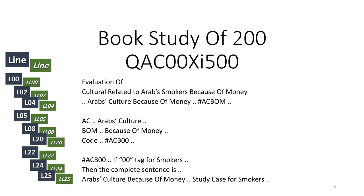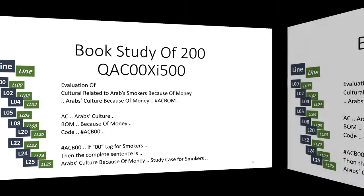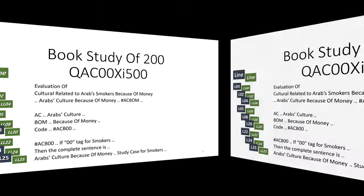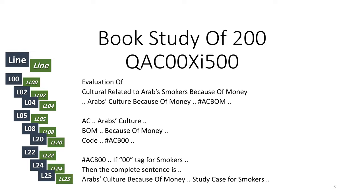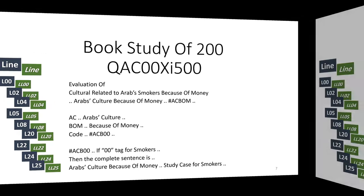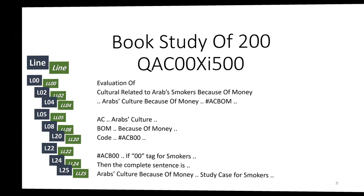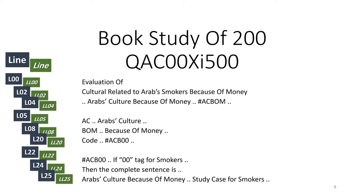First of all, this is coding for Ramadan 44, or Daraim 44, Ramadan tournament — we can say DRT. In this presentation, we have the numbering system, which you can notice, and I will explain the book study of 200, which is also QAC.